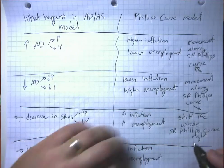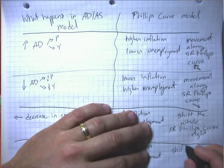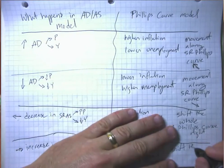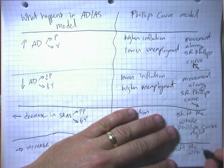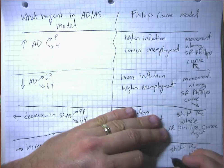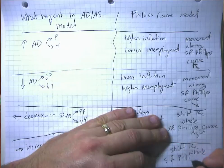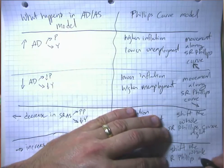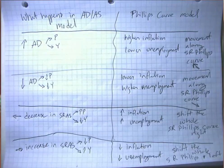So we're going to shift the whole Phillips curve, short-run Phillips curve to the right, sorry, to the left, excuse me. Okay, so that's your summary of the main ways in which this can happen.